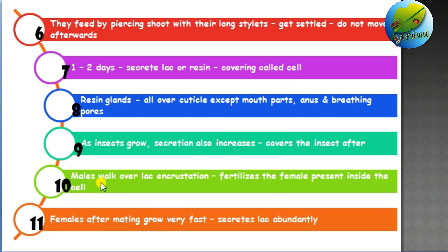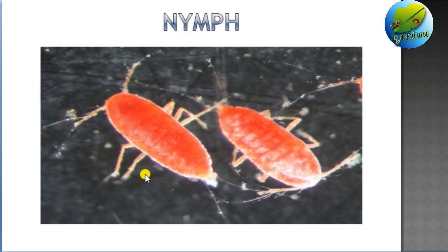As the insect grows, the secretion increases, covering the whole body. After emergence, males walk over the lac encrustation to fertilize the female cells present inside. After mating, females grow rapidly and secrete lac abundantly. So we call the major producer of lac the female caste of the organism. The nymphs look like this — the red-colored one shown is the first instar.